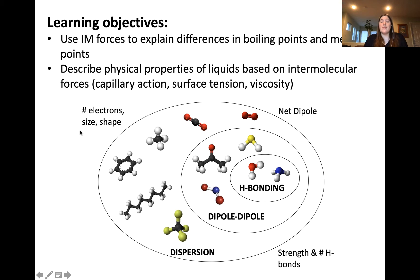This is because the electron cloud region for overlap controls the strength of the dispersion forces. For dipole-dipole forces, it's the net dipole and the difference in electronegativity, effectively, between all of the different atoms. And for hydrogen bonding, it's the number of hydrogen bonds that can form within a given set of molecules.